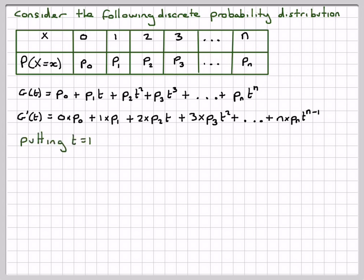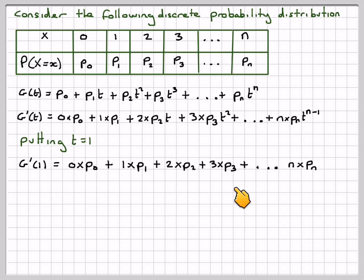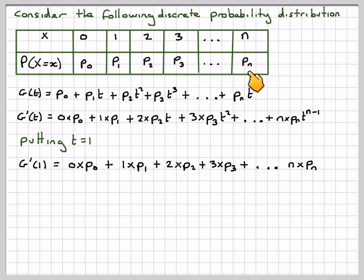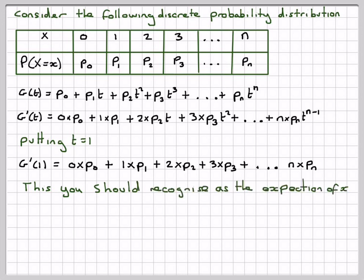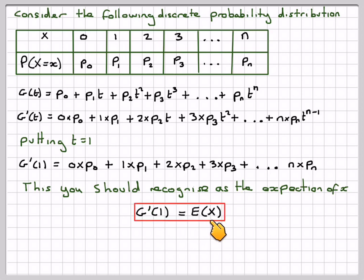If you put T = 1, then G'(1) = 0·P0 + 1·P1 + 2·P2 + 3·P3 + ... + n·Pn. You will recognize this is actually finding the expectation for this probability distribution. So G'(1) is the same as the expectation E(X) of the original probability distribution.